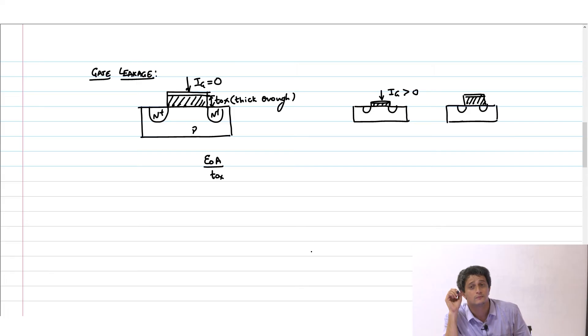If you increase your oxide thickness and you also increase epsilon_0 by the same factor, then the capacitance would still remain the same.